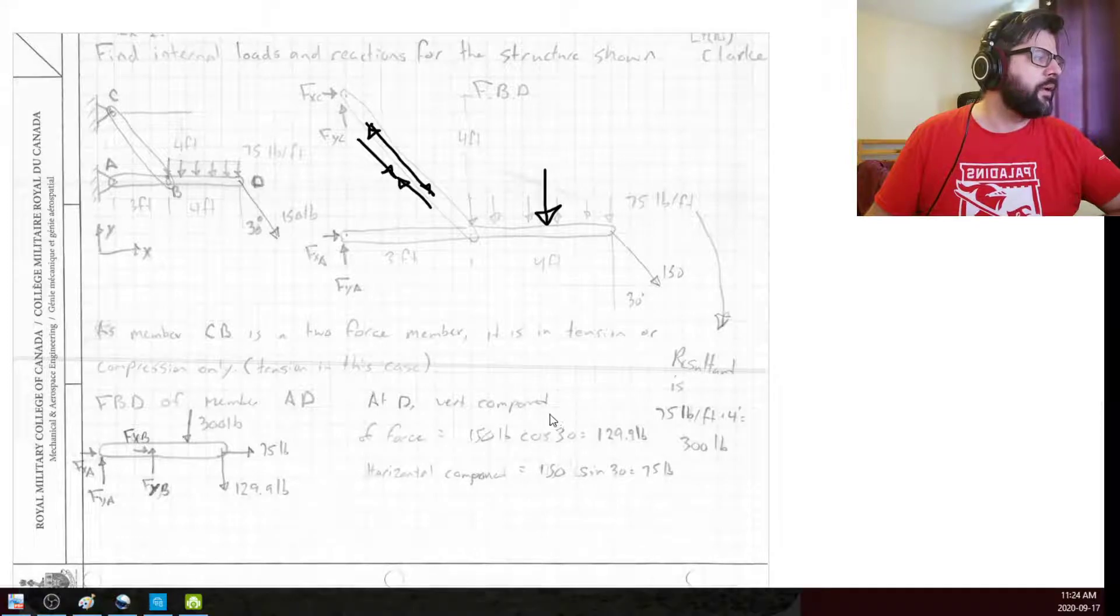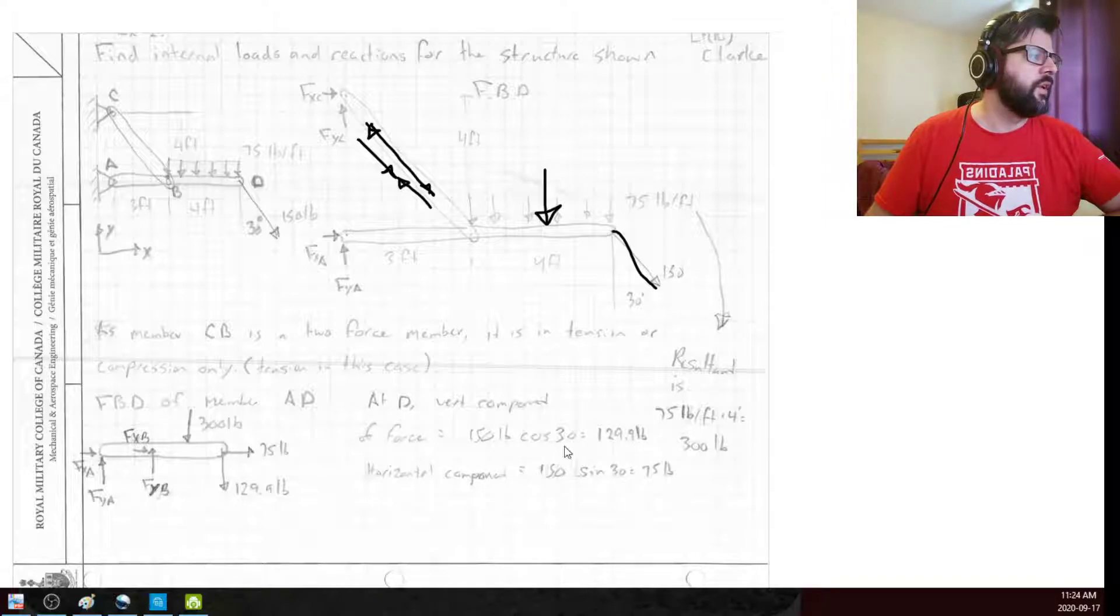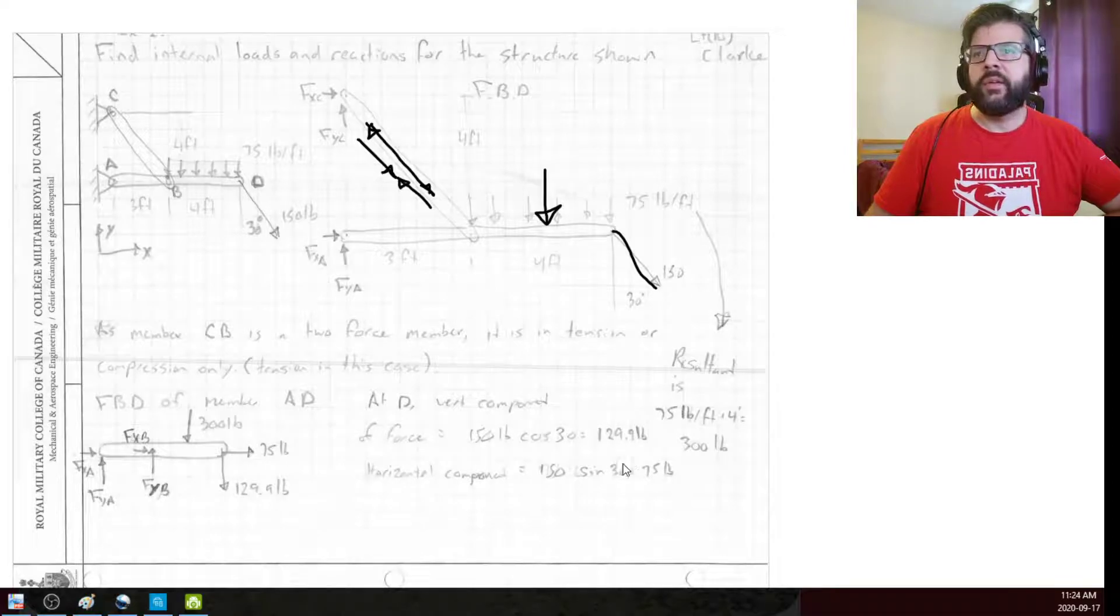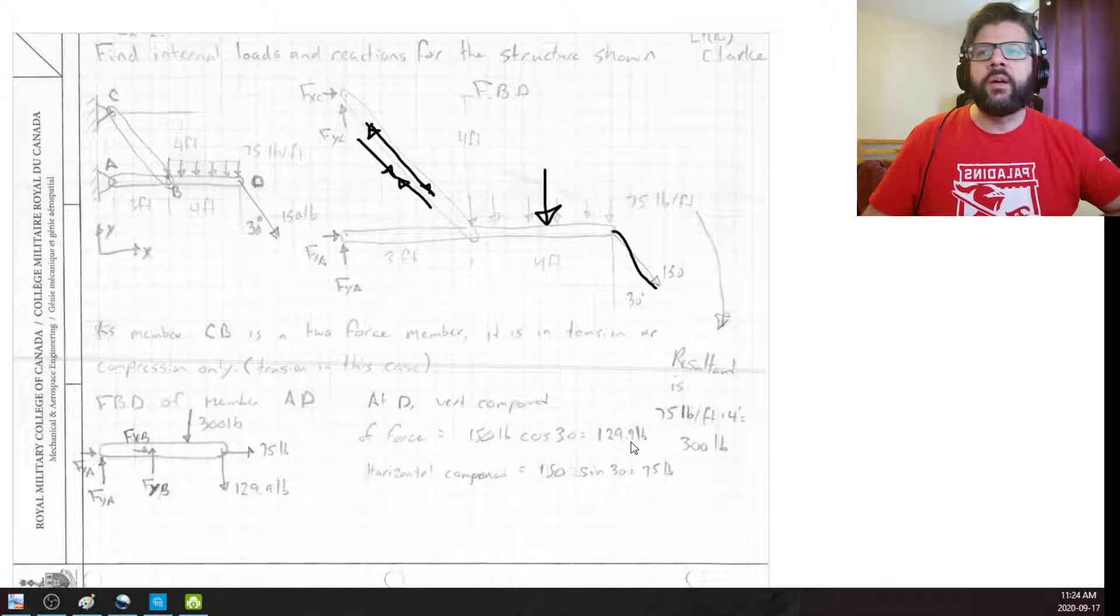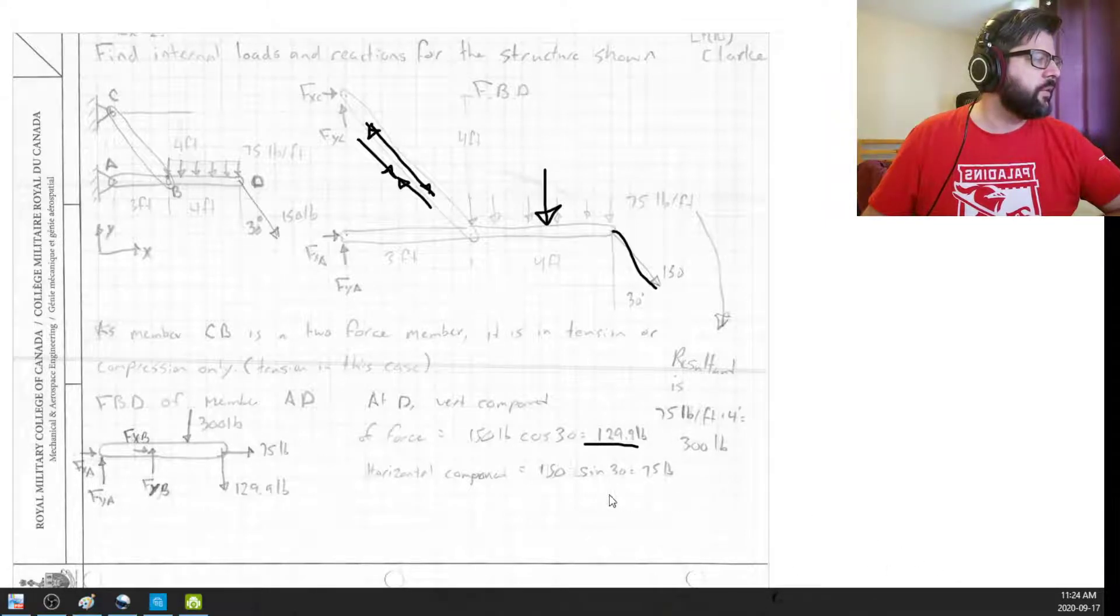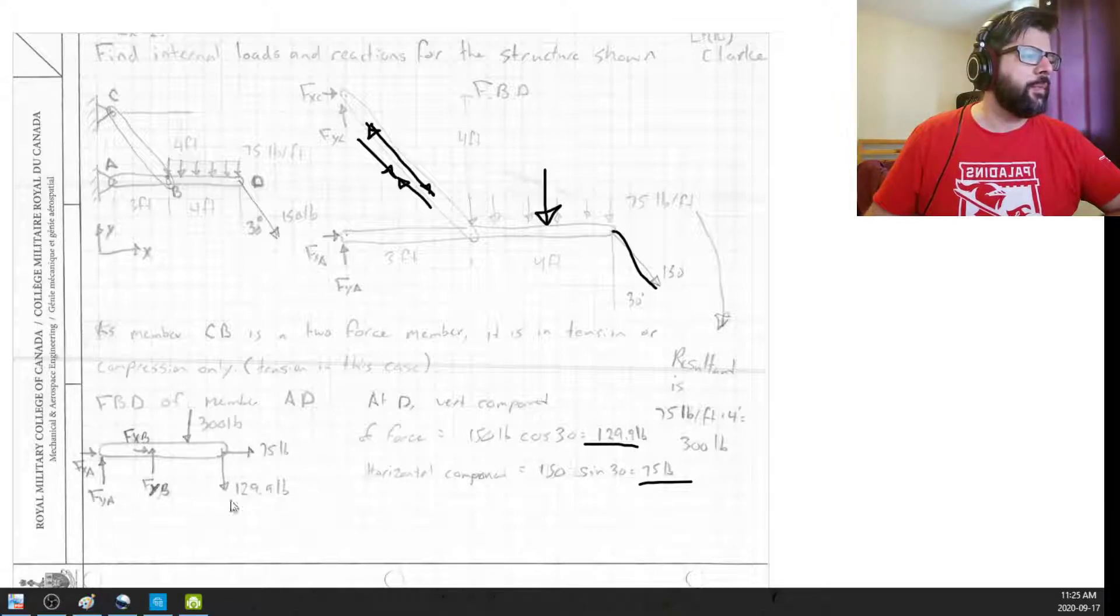And I also broke up this weight into its horizontal and vertical components. So just based upon the angles given, we've got the vertical component at 129.9 pounds. We've got the horizontal component at 75 pounds. So here's a free body diagram just of that member that we're looking at.